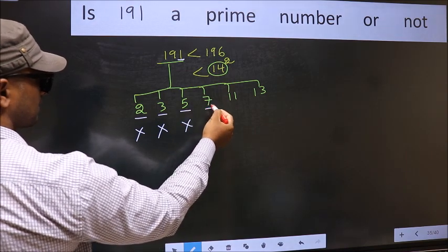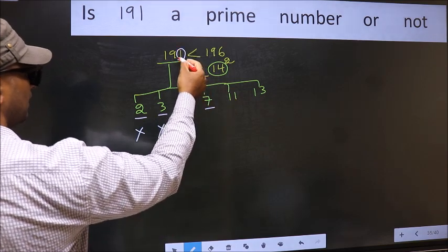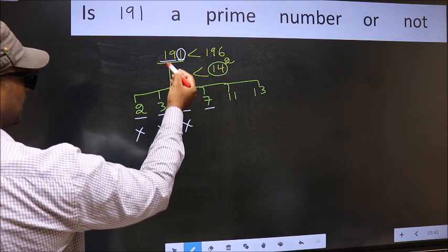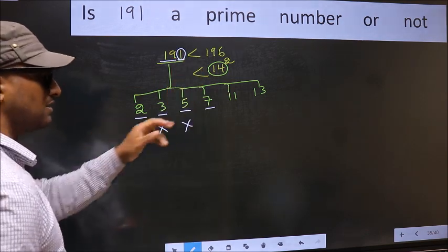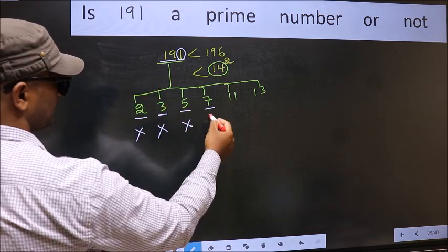Next, number 7. To check divisibility by 7, you double this. 1 into 2 is 2. Subtract from 19. 19 minus 2 equals 17. 17 is not divisible by 7, so this number is also not divisible by 7.